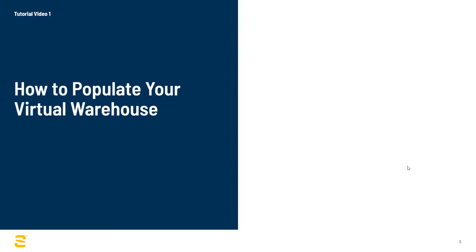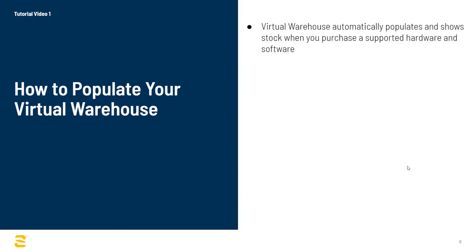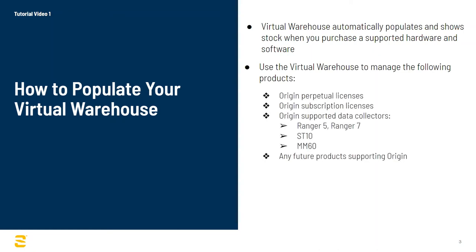Let's go over how to populate stock into the Virtual Warehouse. Virtual Warehouse populates automatically and shows the stock as you buy supported hardware and software from us. The supported products that will be managed on the Virtual Warehouse include all forms of Origin Perpetual licenses, all forms of Origin subscription licenses, Origin supported data collectors — which are Ranger 5, Ranger 7, SD10, and MobileMapper 60 — as well as any future data collectors which may support Origin.